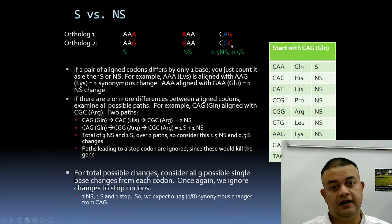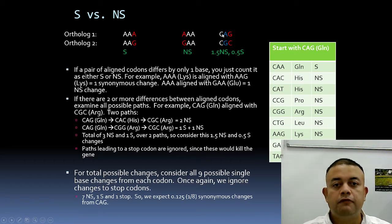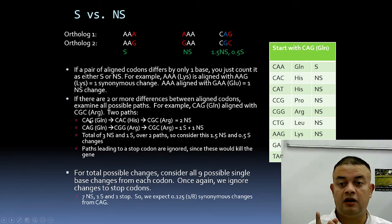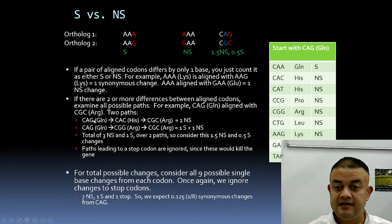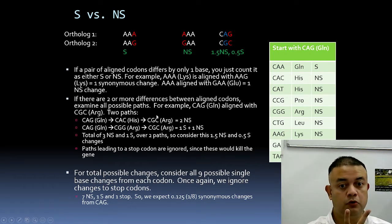The third position becomes complicated because two mutations occur at positions two and three simultaneously. To handle this, find all possible mutational paths. For CAG changing to CGC: path one changes position three first — CAG to CAC (histidine) — then position two changes — CAC to CGC (arginine). In this path, glutamine changes to histidine then to arginine: both changes are non-synonymous — two non-synonymous mutations.